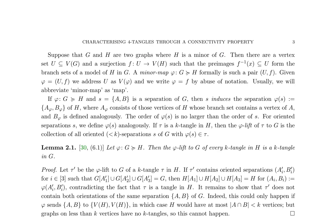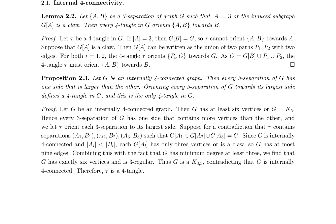Characterizing four-tangles through connectivity properties is a crucial aspect of graph theory. A minor map, a fundamental concept, is defined as a function that maps a k-tangle to a graph, preserving its structure. The phi-lift of a k-tangle to a graph is a critical property of minor maps, allowing the lifting of k-tangles to tangles in another graph under certain conditions, as stated in a key lemma. The focus then shifts to internal four-connectivity, where a series of lemmas demonstrate that every four-tangle in a graph either has a specific orientation or is prohibited by the graph structure.